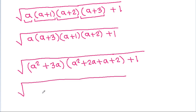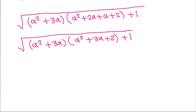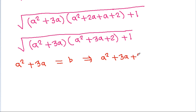Under the square root, 2a plus a is 3a, plus 2 plus 1. Now, if we take a squared plus 3a equal to b, then a squared plus 3a plus 2 will be equal to b plus 2.